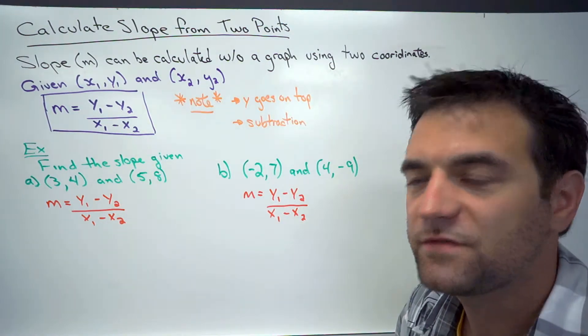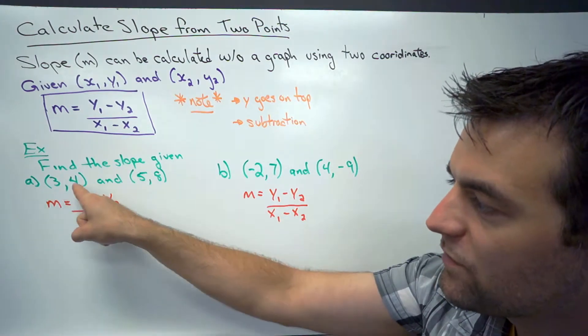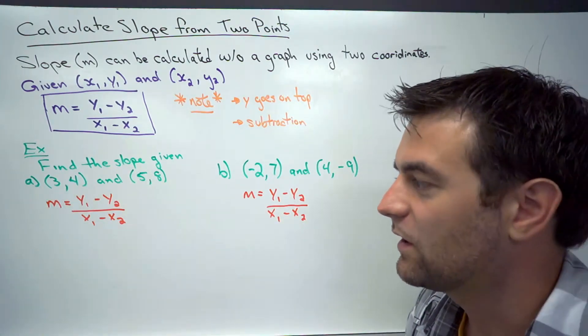Now let's look at a couple of examples of actually calculating the slope. So given the point 3, 4 and the point 5, 8, we want to calculate the slope.